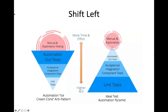So how do we shift left? One of the ways to do that is by investing in the right sort of testing. What you'll find oftentimes, especially in traditional organizations, is that when they're automating their testing process, they tend to implement what we call the ice cream cone anti-pattern.